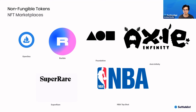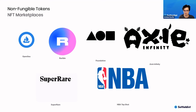You also have things like Axie Infinity, which is in itself a blockchain-based video game. What's interesting about this one is that it's a play-to-earn model — as you play the game, you can also earn money in cryptocurrency. You also have things like NBA Top Shots, which is a platform with a licensing deal with the NBA, allowing them to sell particular moments from NBA history or trading cards of particular players.